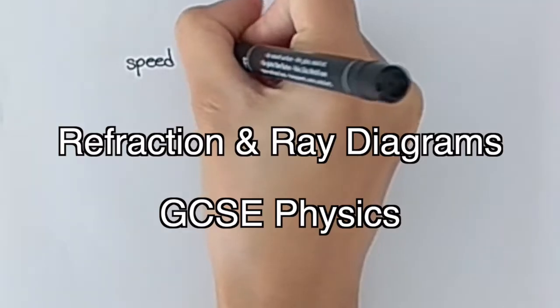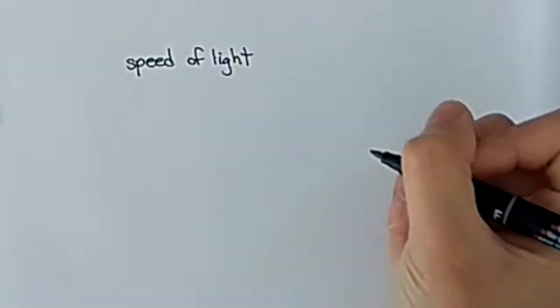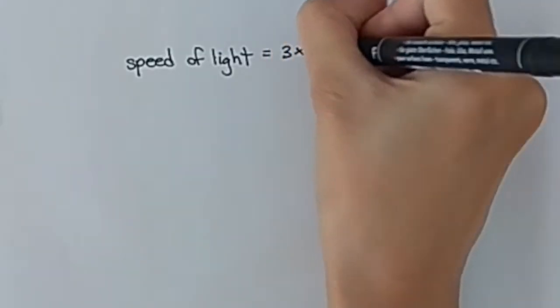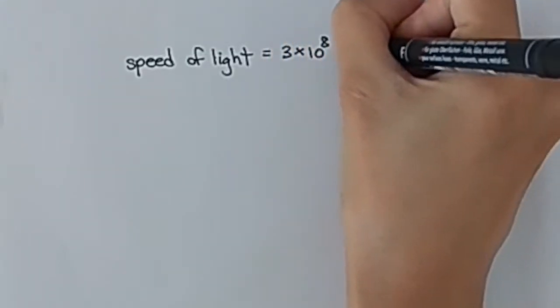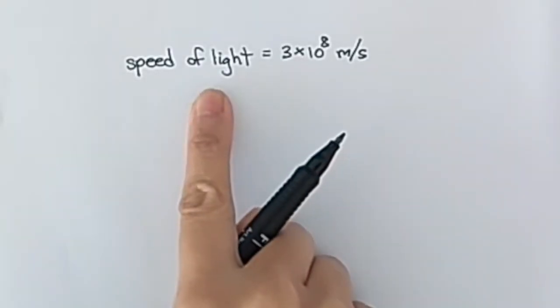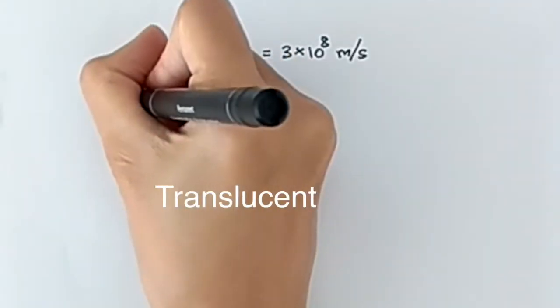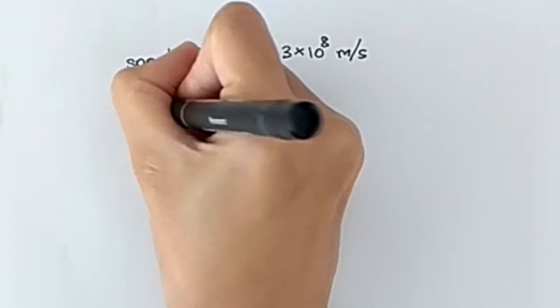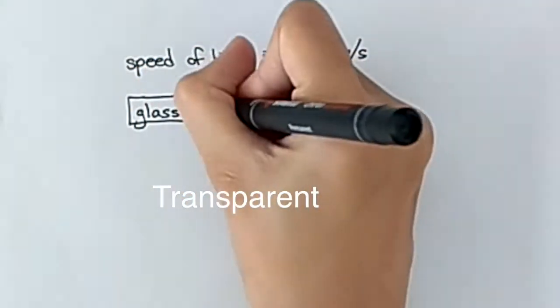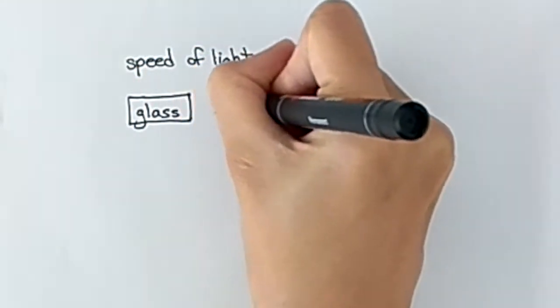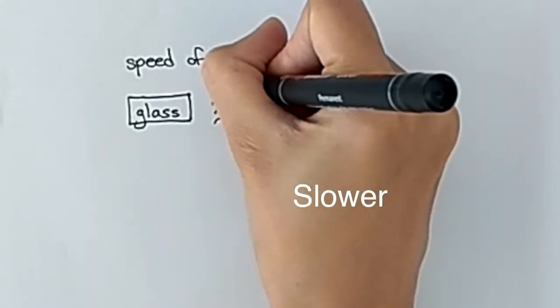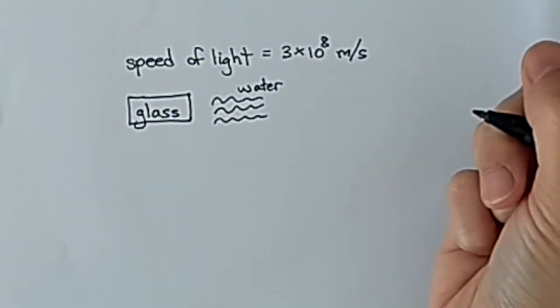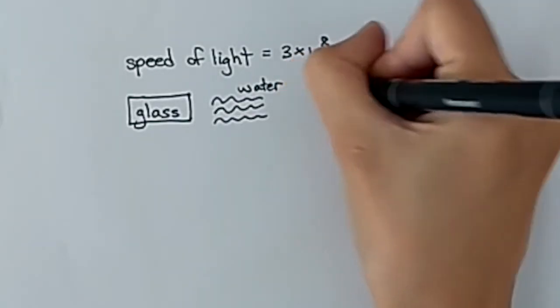The speed of light is always the same in a vacuum, always 3 times 10 to the power of 8 meters per second. But what if light goes through a material that's translucent or transparent? It's going to travel at a much slower speed, less than 3 times 10 to the power of 8.